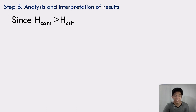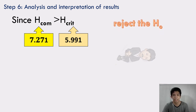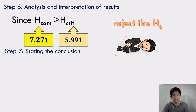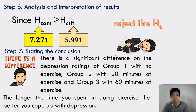Step 6: Analysis and interpretation of results. Since H computed equals 7.271, it is greater than the critical value of 5.991. Therefore, we reject the null hypothesis. Step 7: Conclusion — we therefore conclude that there is a significant difference in the depression ratings of Group 1 (no exercise), Group 2 (20 minutes of exercise), and Group 3 (60 minutes of exercise). The longer the time spent doing exercise, the better you cope with depression. 60 minutes of exercise is better compared to 20 minutes and no exercise at all.